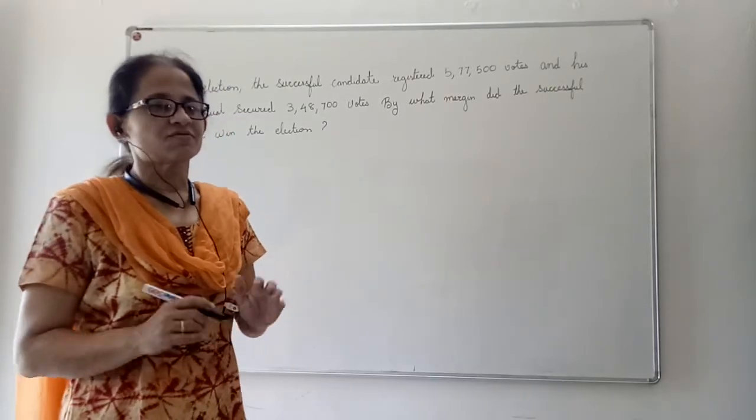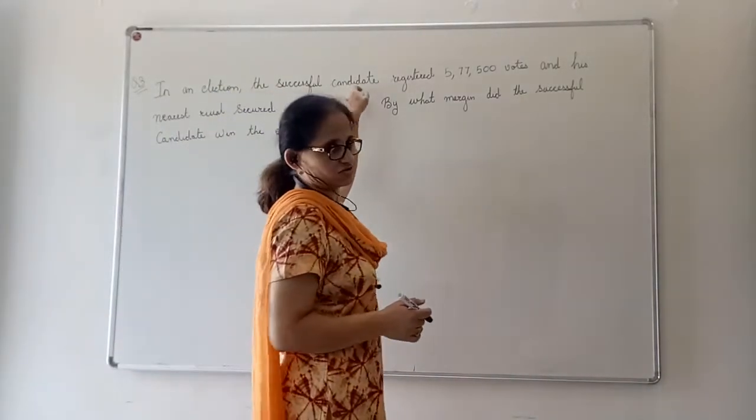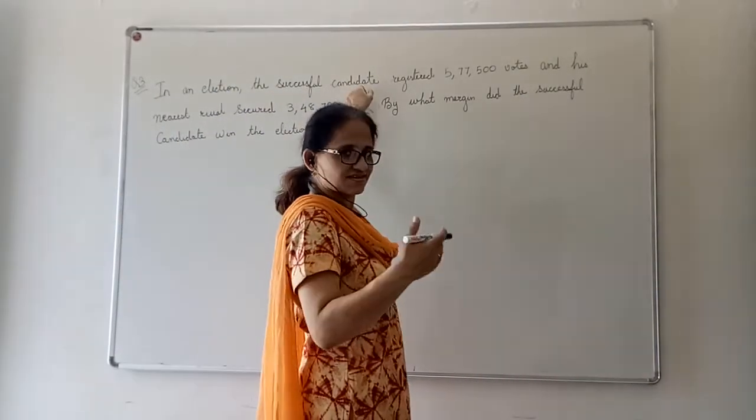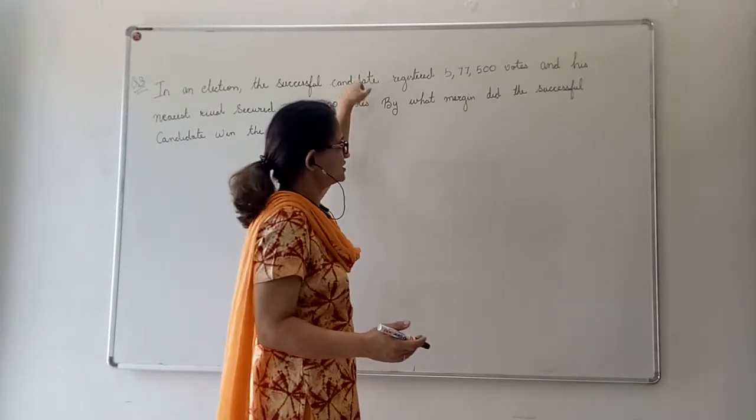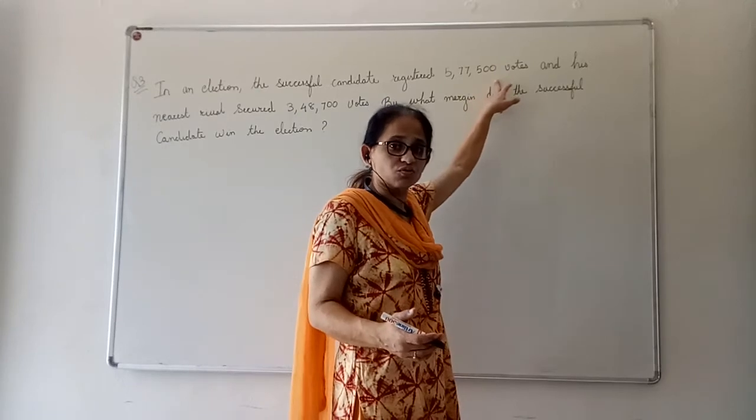For example, let us assume that the successful candidate or the successful party, for example, BJP, got 5,77,500 votes.